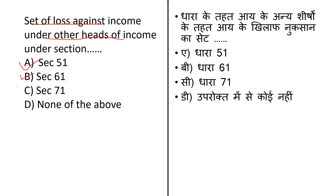Third option is Section 71 — inter-head adjustment. Section 71 means a loss under one head of income can be set off against the income from another head of income, but in the same previous year. The last option is none of the above. The correct answer here is option C, that is Section 71.